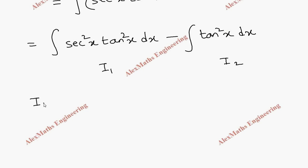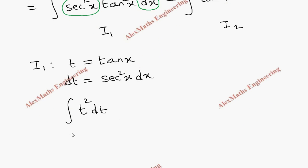The first part I1: let's take t equal to tan x, and dt will be secant squared x dx. So we have secant squared x dx, this will become dt, and this tan squared x will become t squared. So t squared dt, and t squared integration is t cubed by 3 plus c1.